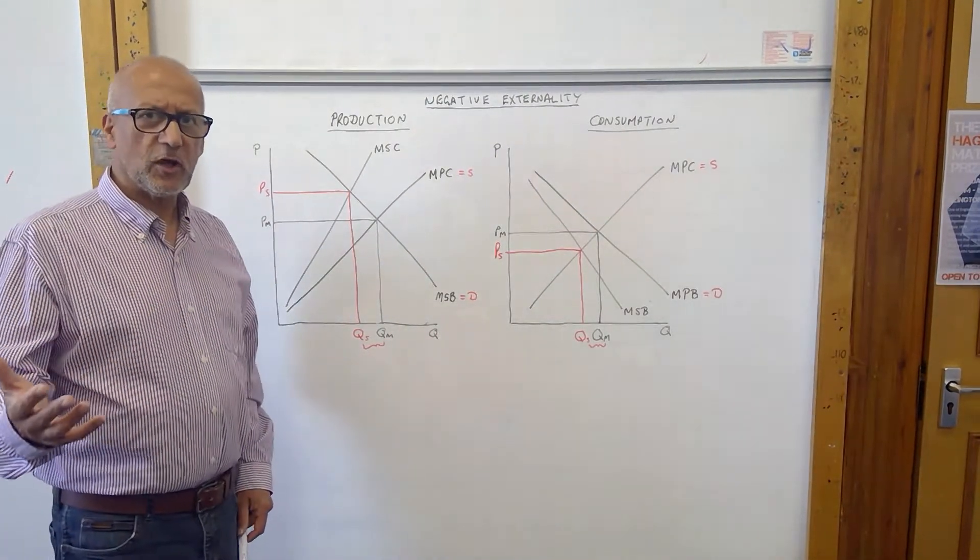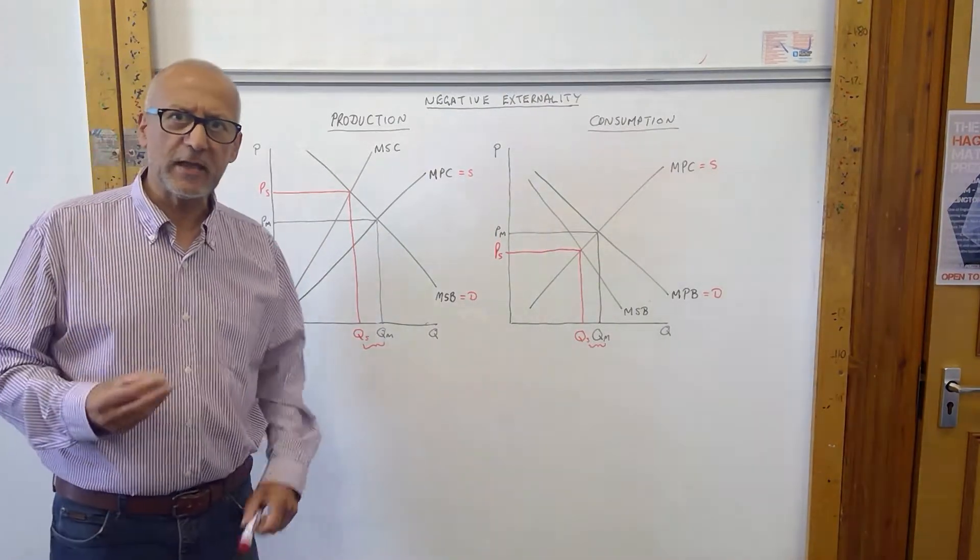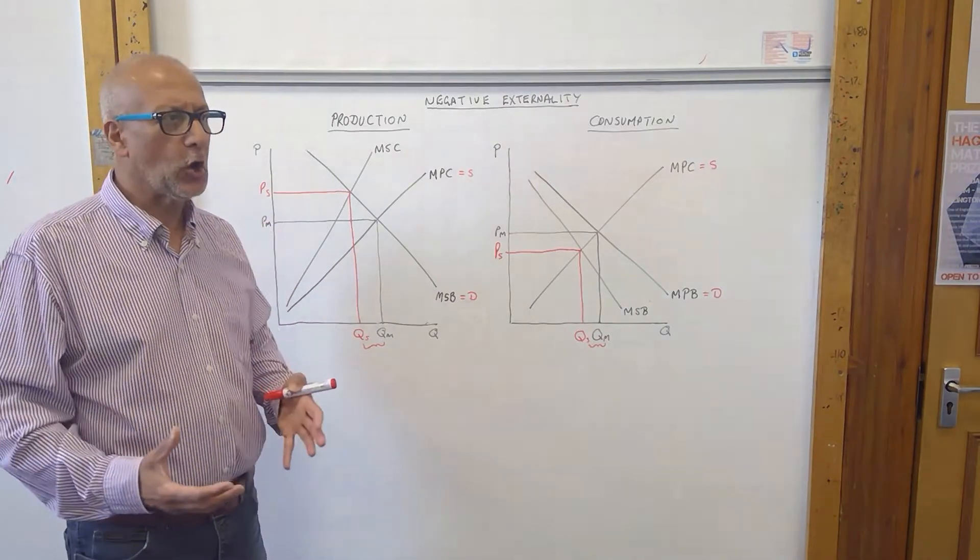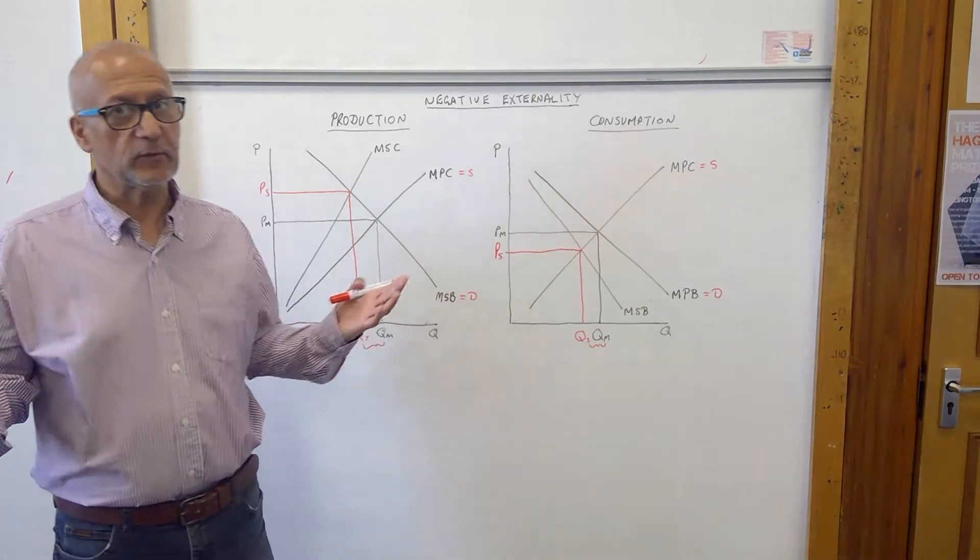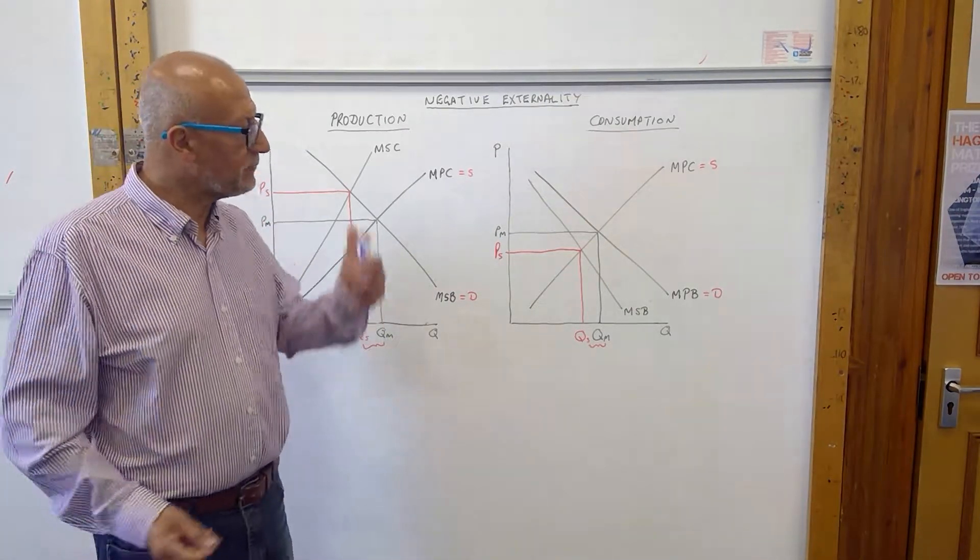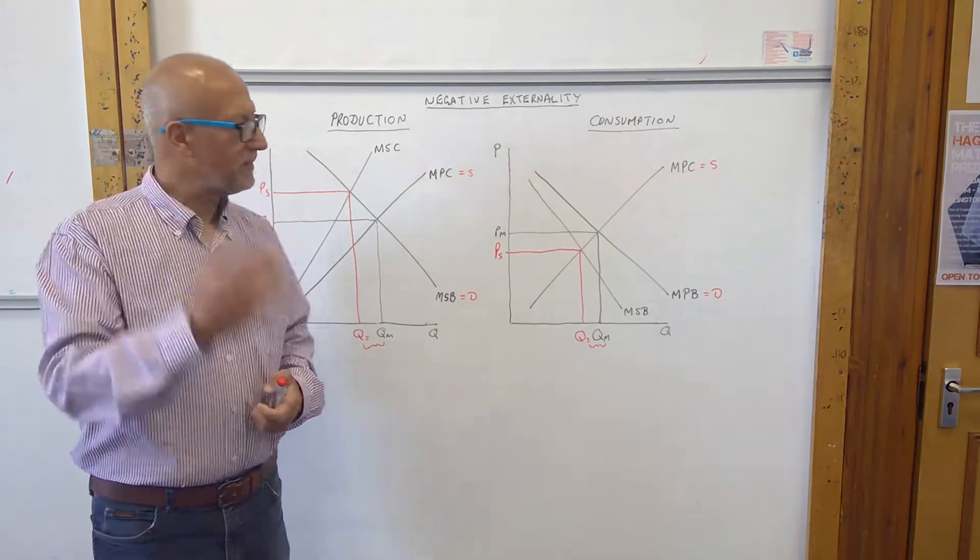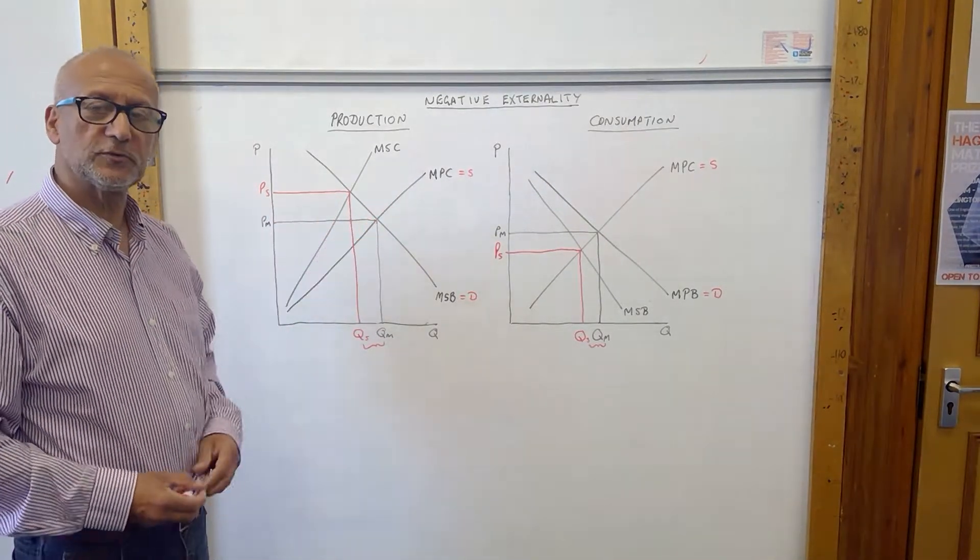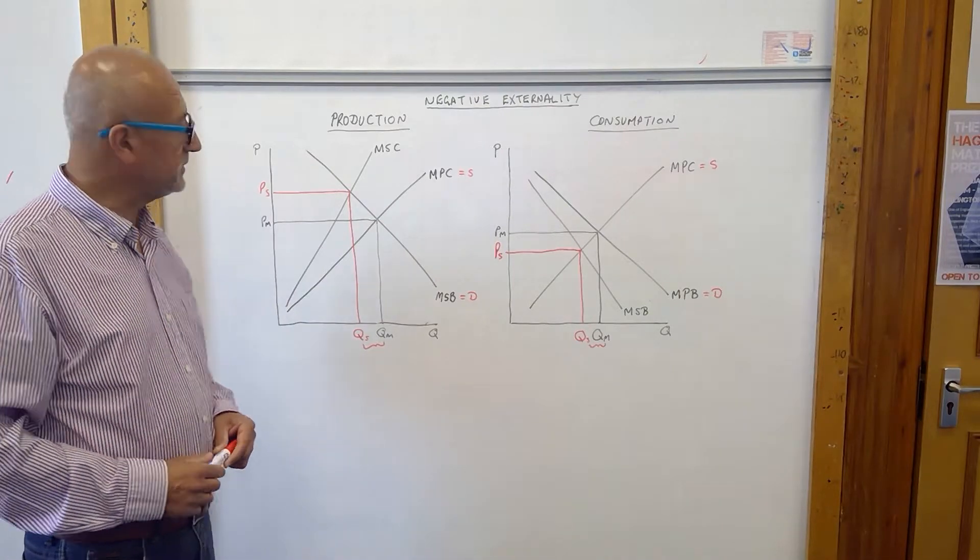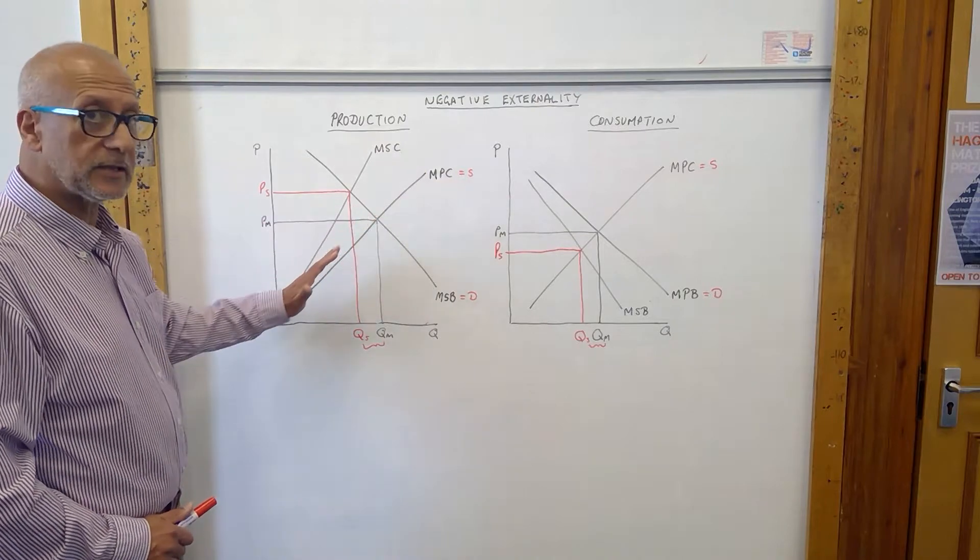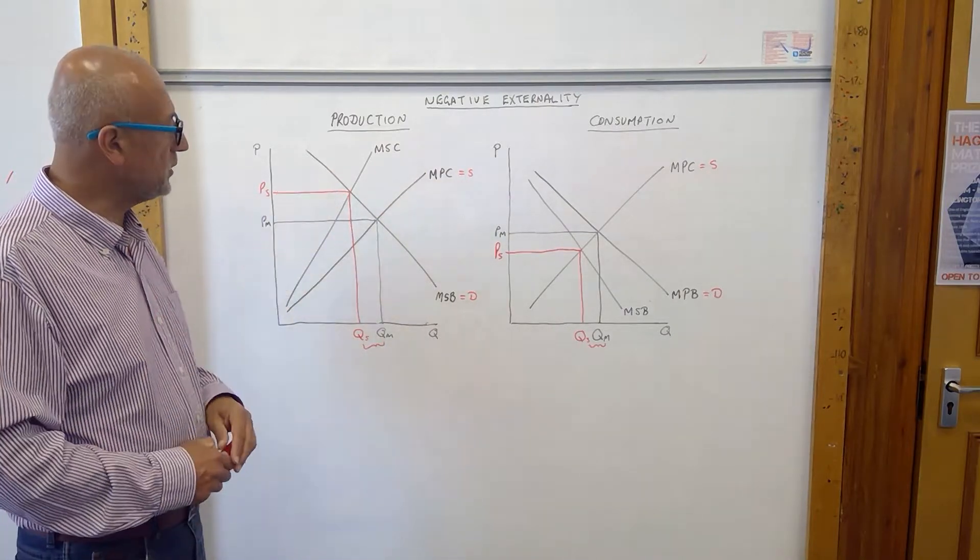The most obvious traditional method is taxation. Assume now that the government imposes a tax on car manufacturers to reduce their production. Because that will reduce pollution and reduce the cost to society. If it imposes a tax, the cost of production for the producer will go up and it will become less productive. The natural consequence of that is the supply curve will shift to the left.